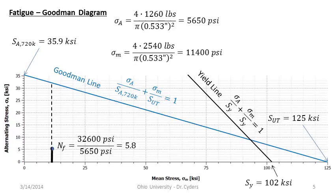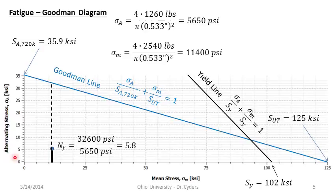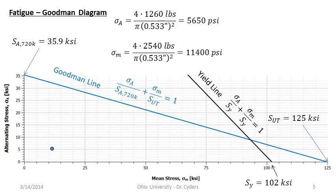We started with a static calculation of 6, went through the SN diagram and got 6.4 — which was higher because we were only looking at alternating stress. Now we're looking at the elevated mean stress using the Goodman diagram and finding 5.8. There's not much difference between 6.4 and 5.8 here because our mean stress is so low, placing us very close to the vertical axis. What if the mean stress and alternating stress are related — meaning that if I increase the alternating stress, it brings the mean stress up with it?